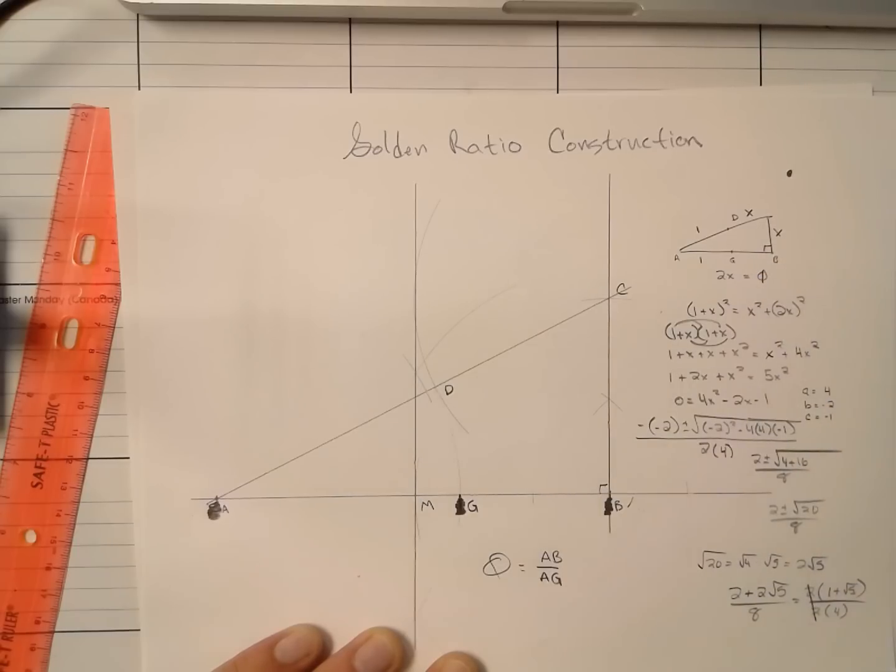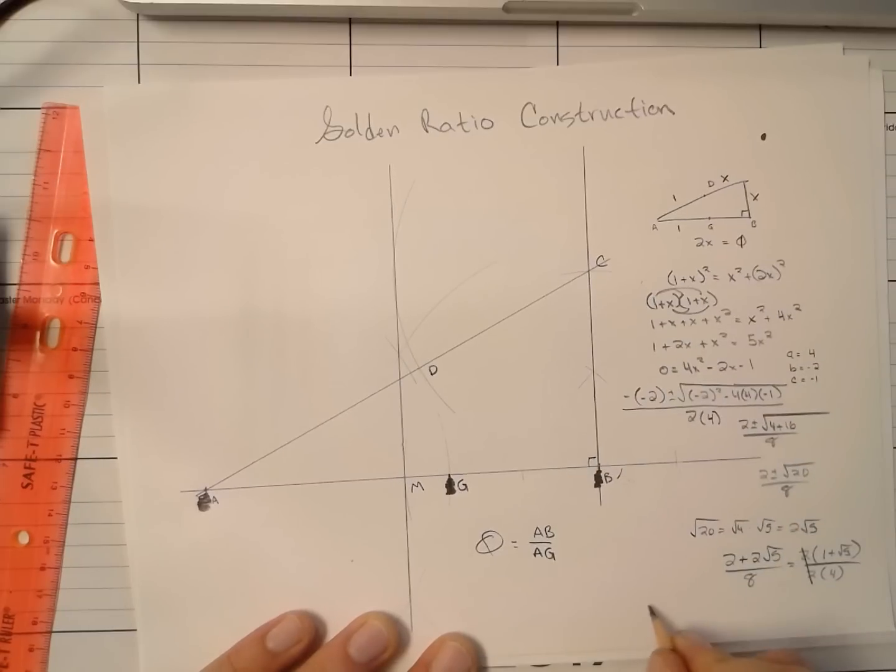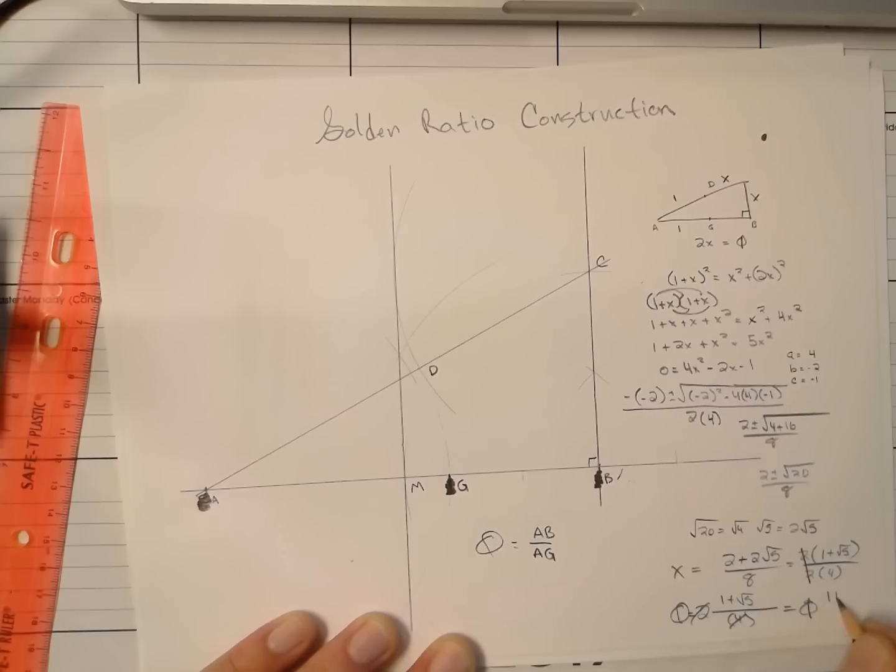Now, 2x should equal phi. So if I have 2x equals phi, and I want to get phi, and this is, once again, my x value, I'll just multiply this guy by 2. 2 times 1 plus root 5 over 4, and that cancels. And I get phi to equal 1 plus the square root of 5 over 2.